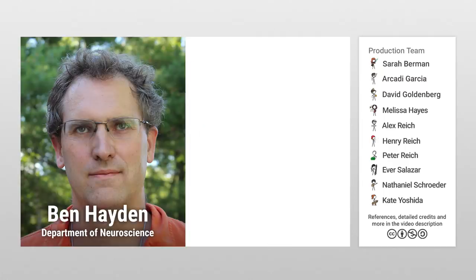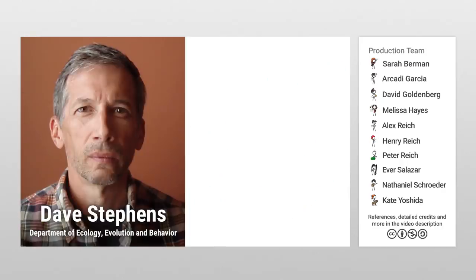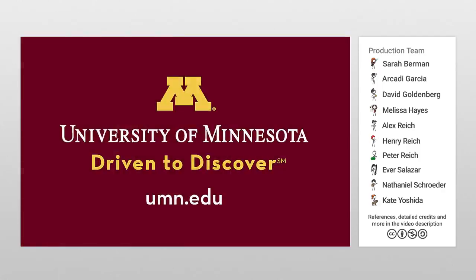Ben Hayden, in the Department of Neuroscience, studies the biological mechanisms, like reward-tracking neurons that we use to evaluate choices. And Dave Stevens, in the Department of Ecology, Evolution, and Behavior, investigates behaviors like foraging from an evolutionary standpoint, to help us understand the broad forces that have shaped our decision-making process. Thanks University of Minnesota!